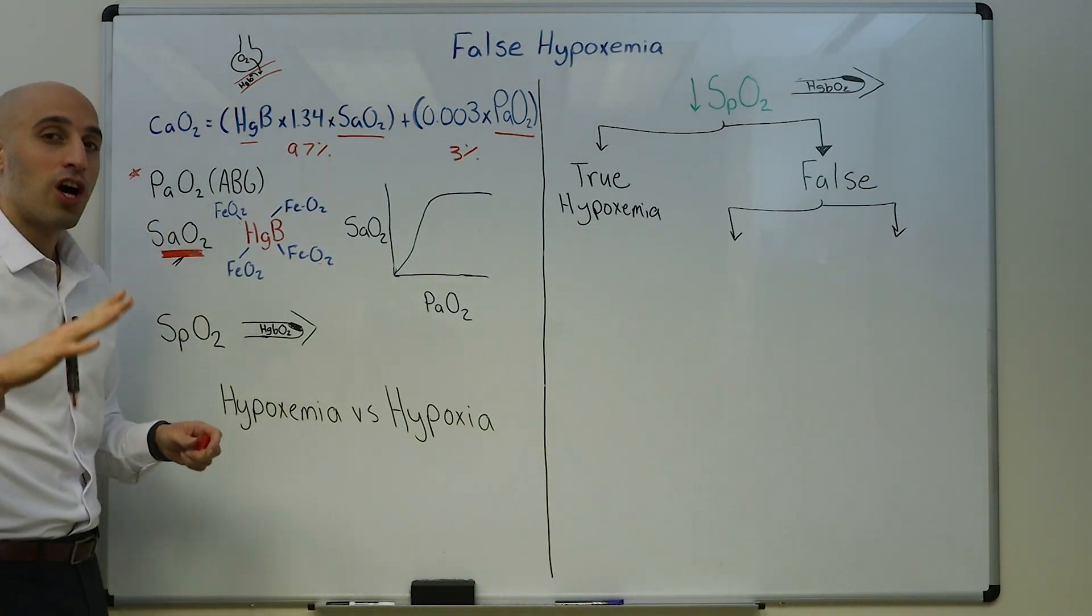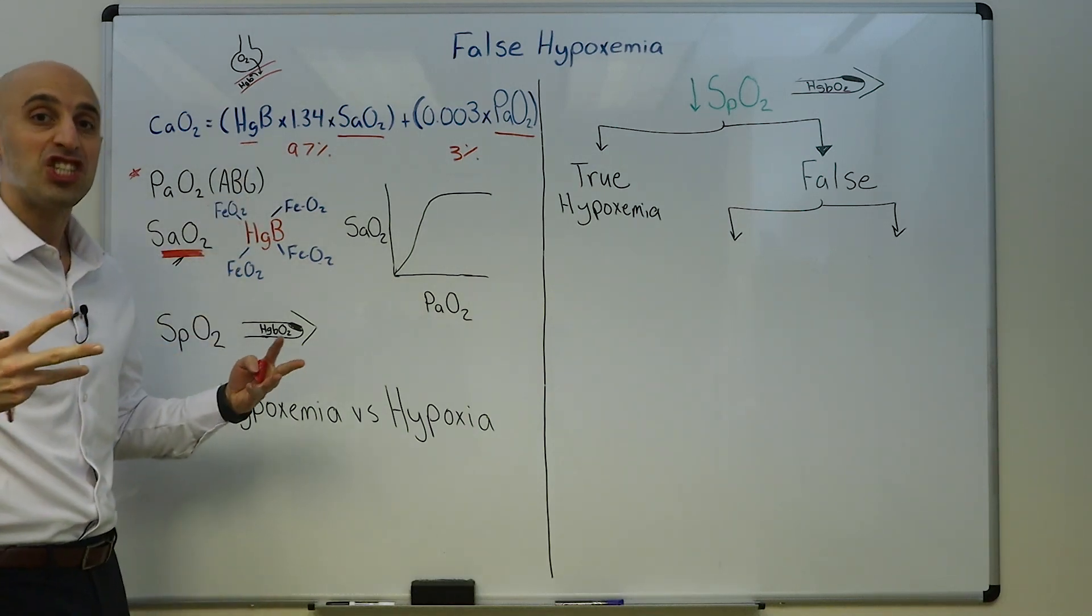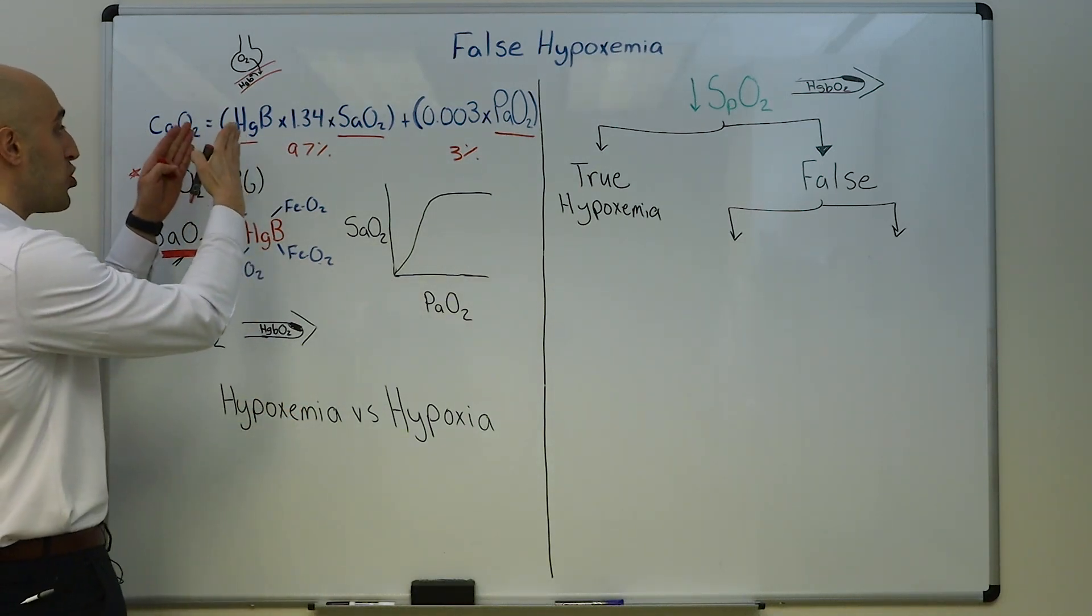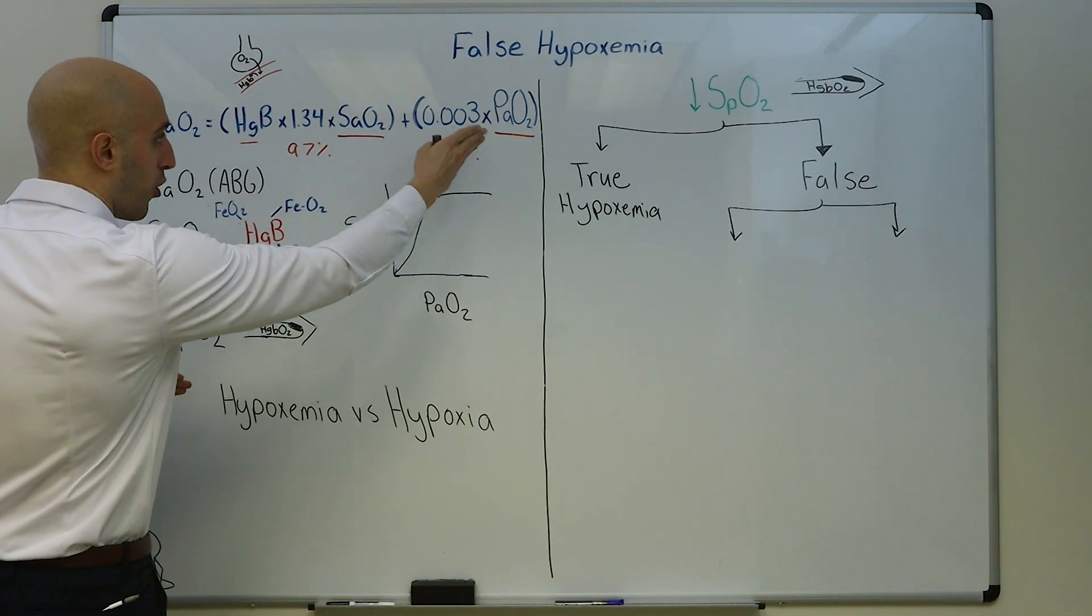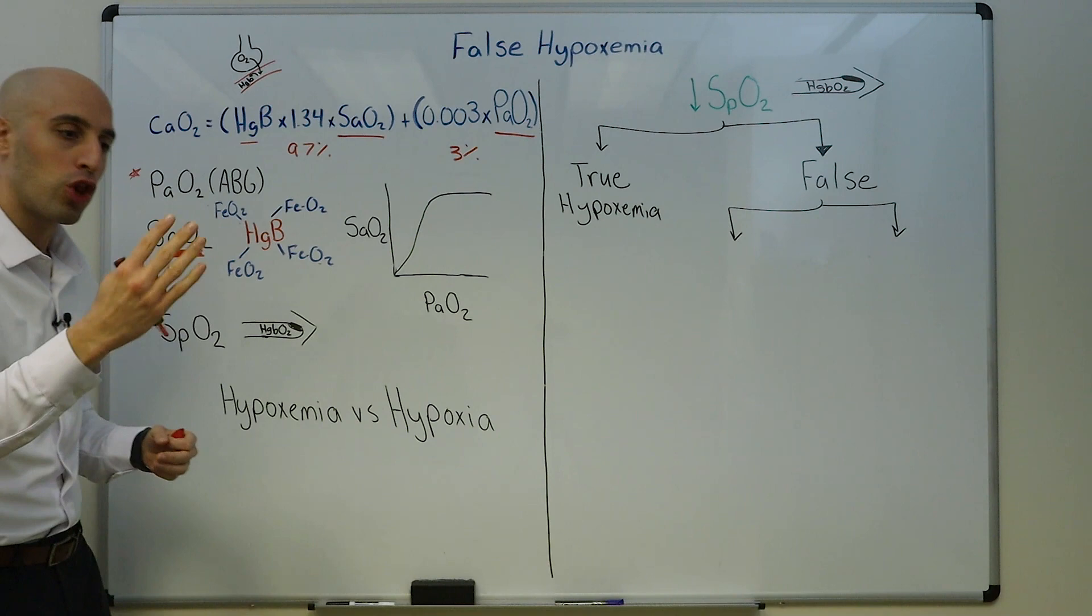So any cause of true hypoxemia will affect the partial pressure of oxygen. You can refer back to our video on true hypoxemia and you'll understand what can affect the partial pressure of oxygen, which is what's measured on the arterial blood gas.